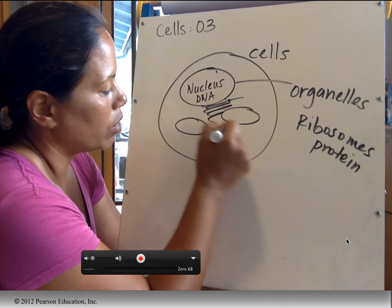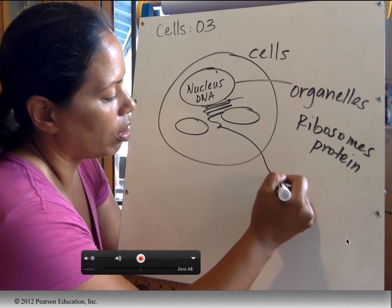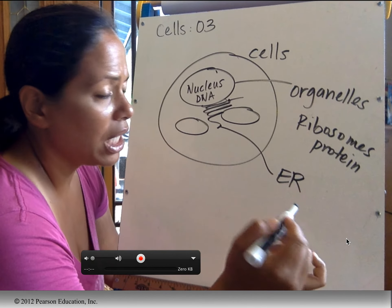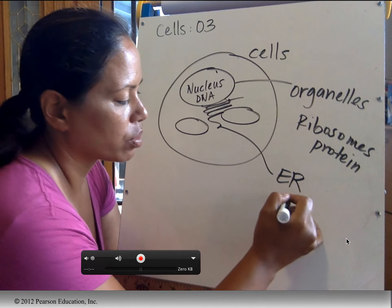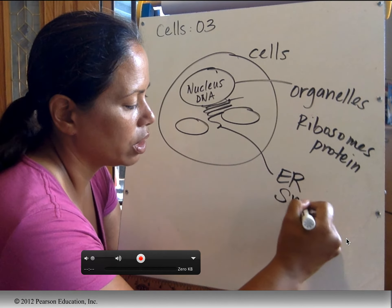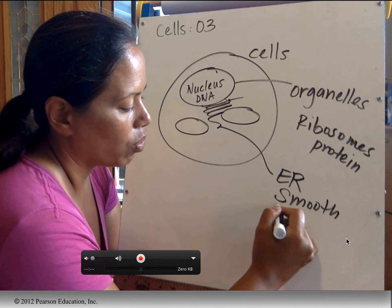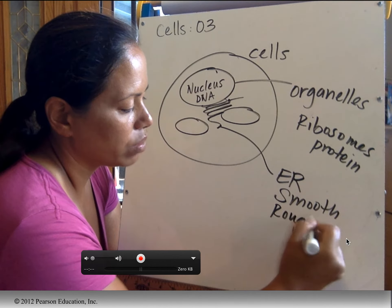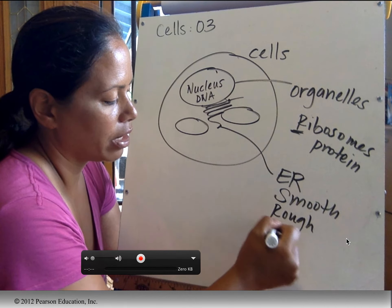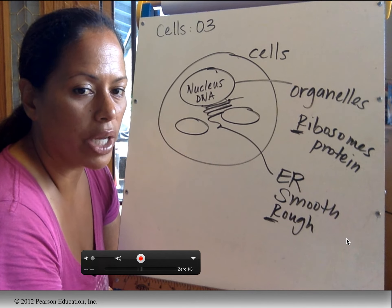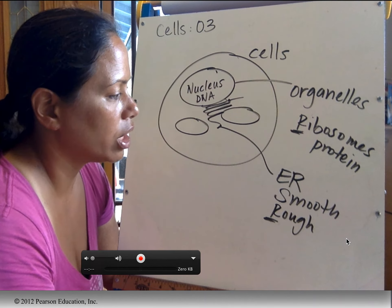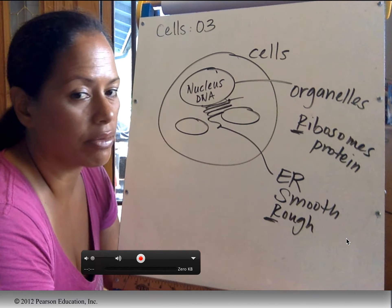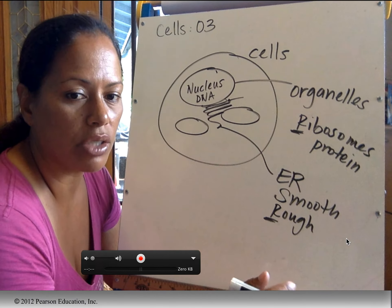What else do we have? We have what we call ER — endoplasmic reticulum. There are two types: one that's smooth and one that's rough. The one that's rough has ribosomes on it, so it's for the production of proteins, but these proteins are exported out of the cell. This is just an overview for you.